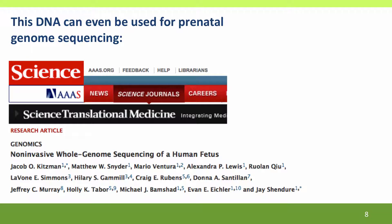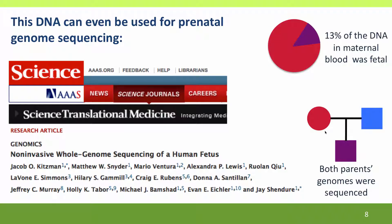It's even possible to use fetal DNA in maternal blood for genome sequencing — to sequence the fetus's entire genome. This isn't easy and as yet it's not a very clinically important procedure; it was more just to show that it could be done. The researchers sequenced both parents' genomes, then sequenced the DNA in the maternal bloodstream, of which 13 percent was fetal, and were able — mostly by subtracting maternal and paternal sequences — to accurately infer the actual sequence of the baby.